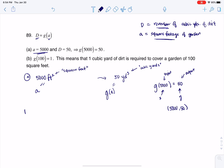and so then part B is saying, hey, what does g, oops, what is that? All right, what is g(100) equaling 1? What on earth does that mean? Well, again,